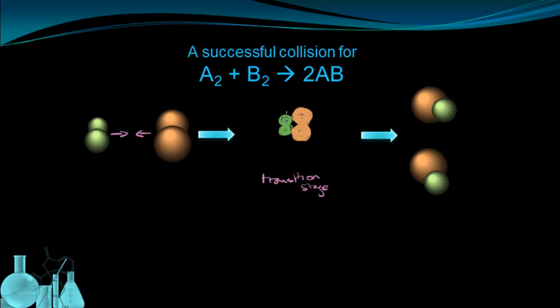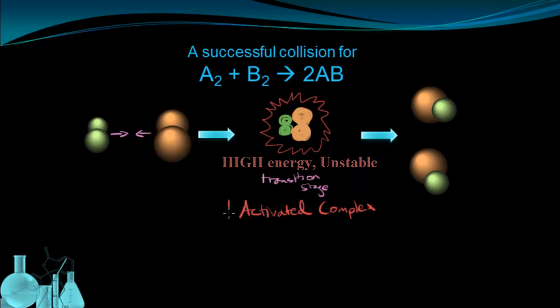And this transition stage looks a little bit like this. Basically it's the moment of impact where the atoms are all sort of stuck to each other in one big blob, and this is a very high energy state. This transition stage is very unstable, very high energy, and it has a special name. It's called the activated complex. So the activated complex is a high energy, unstable arrangement of atoms right when they collide before they finish rearranging into the new products.